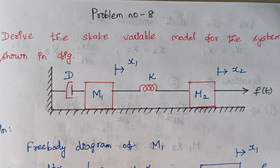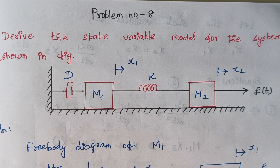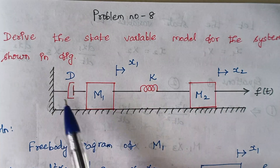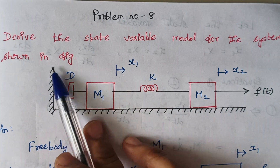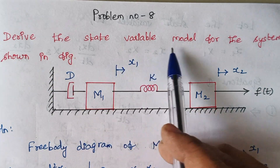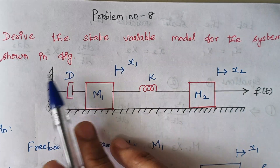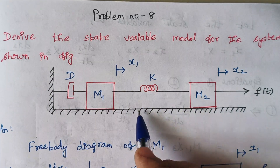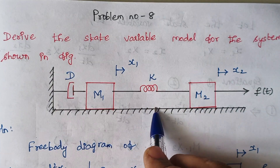Hello viewers, I am Kaushalya. Today we are going to solve problem number 8 under the topic state space model. The problem is: derive the state variable model for the system shown in figure, and this is the given diagram.